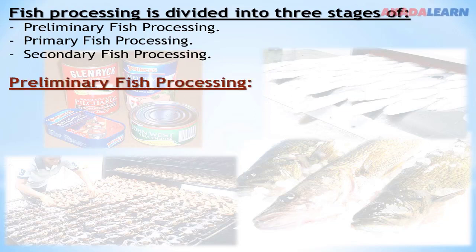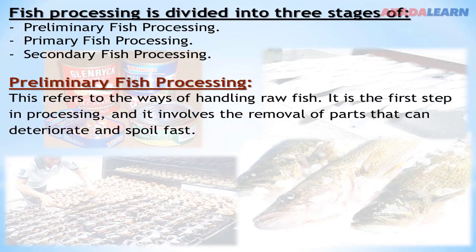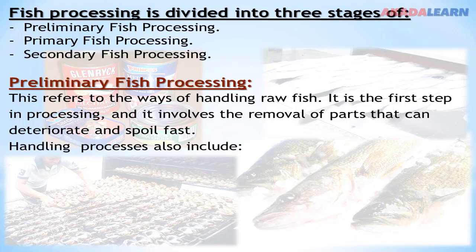The preliminary fish processing refers to the ways of handling raw fish. It is the first step in processing and involves the removal of parts that can deteriorate and spoil fast. Handling processes also include transferring the caught fish from the fishing gear, sorting and grading, blading, gutting, and washing, chilling, sorting the chilled fish, and landing the fish when the fishing vessel returns to port.